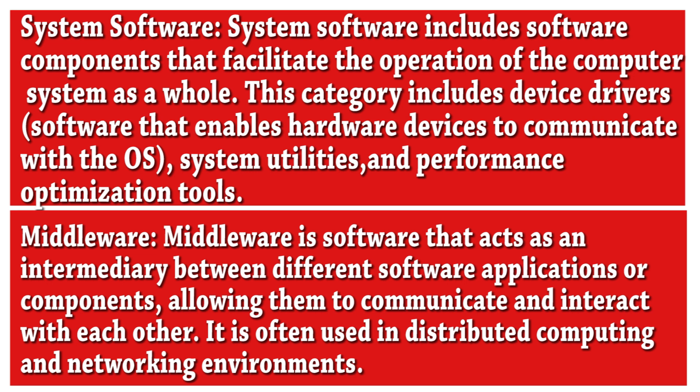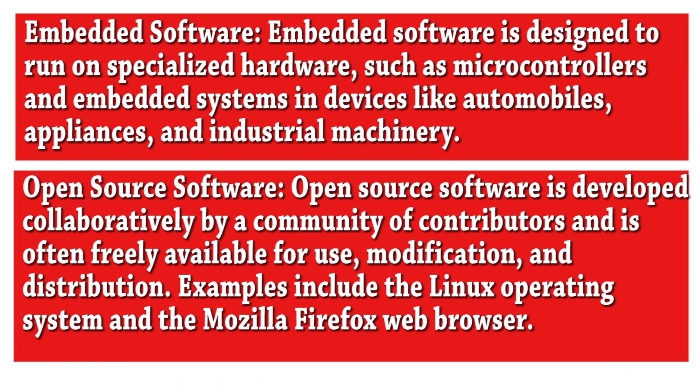System software also includes system utilities and performance optimization tools. Middleware is software that acts as an intermediary between different software applications or components, allowing them to communicate and interact with each other. It is often used in distributed computing and networking environments. Embedded software is designed to run on specialized hardware such as microcontrollers.